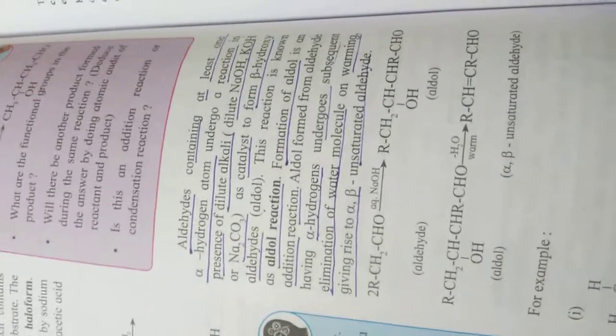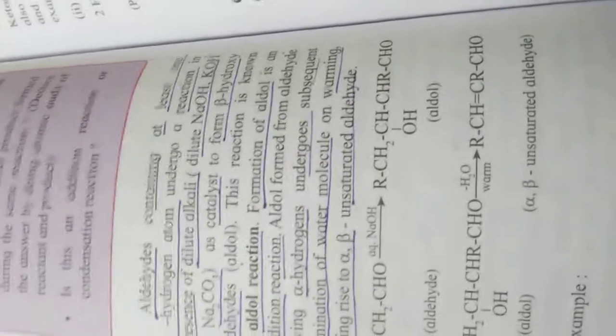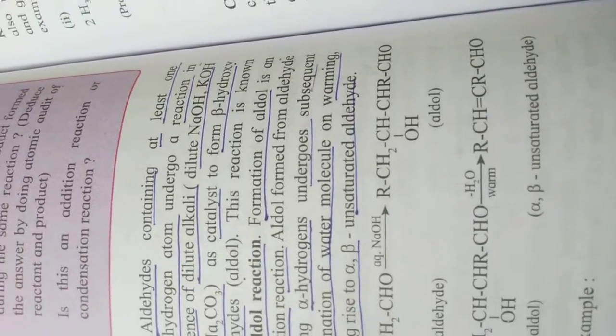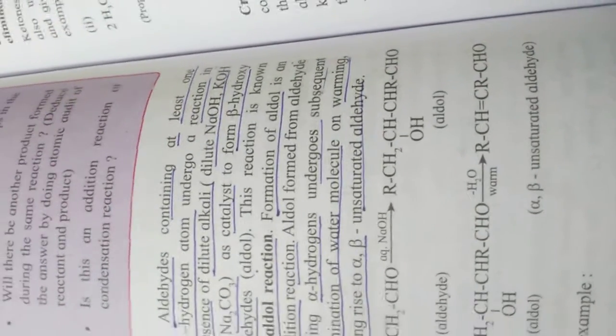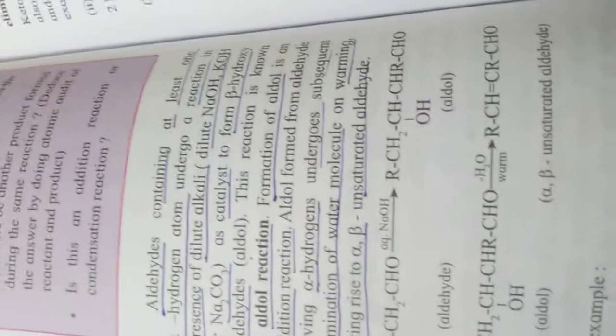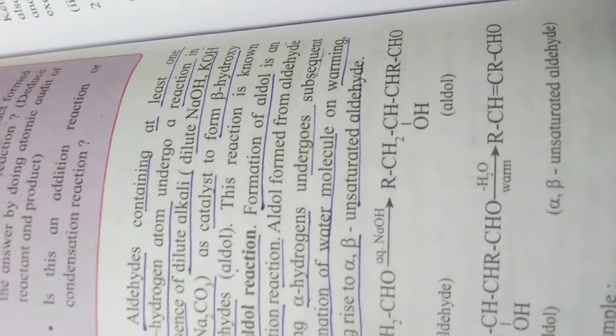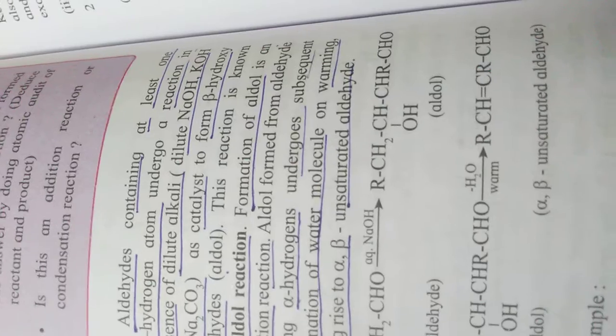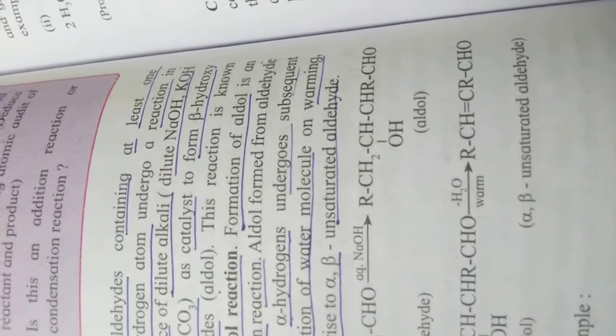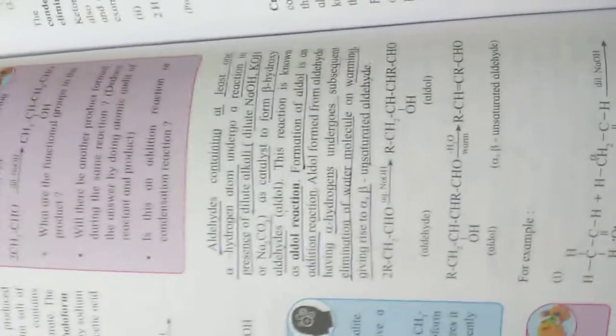Formation of aldol is an addition reaction. Aldol formed from aldehyde having alpha hydrogen undergoes subsequent elimination of water molecule on warming, giving rise to alpha beta unsaturated aldehyde. The overall reaction is aldol condensation, which is an addition-elimination reaction.